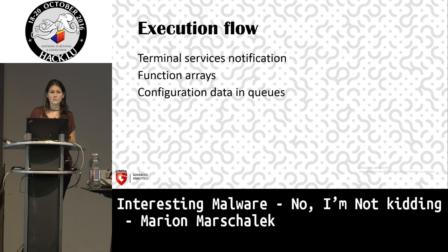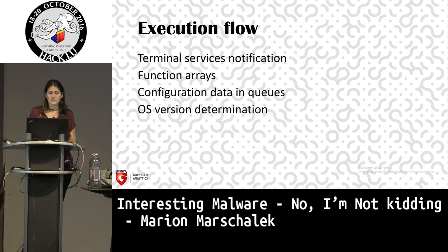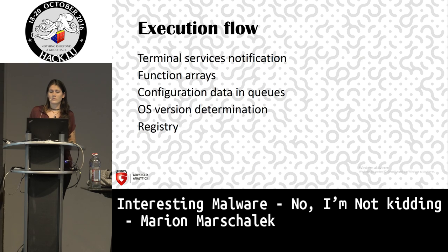Furthermore, the binary is structured in functional arrays. After launch and setup, execution is deferred to functional arrays which execute the initialization, setup, and actual functionality. Configuration data is stored in queues — a lot of configuration data is statically stored within the binary as lists and arrays, then loaded at runtime into queues which serve configuration data to functions. A lot of the configuration data is not indicated by strings or descriptions telling you what it is, making it very hard to determine what the configuration data is supposed to serve. The OS version determination is spread throughout the whole binary, and the binary also makes heavy use of the registry to store runtime data and load it again at later points, making it very hard to statically follow which data is stored and when it's used.